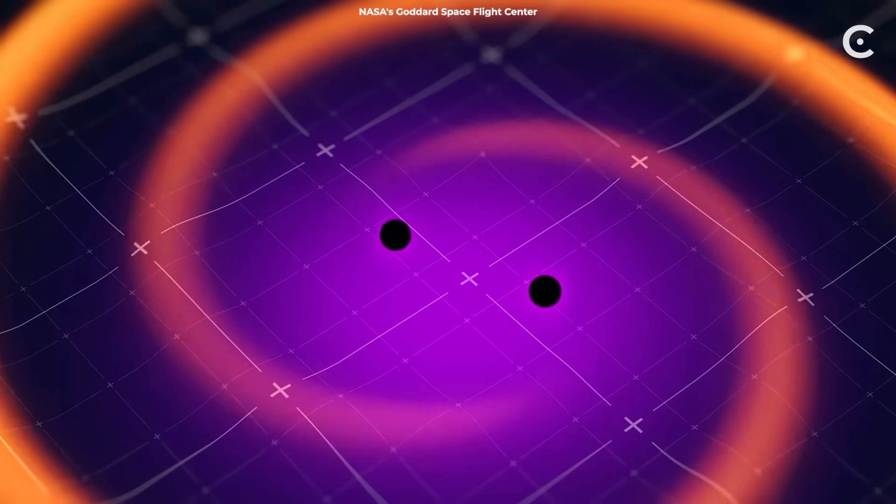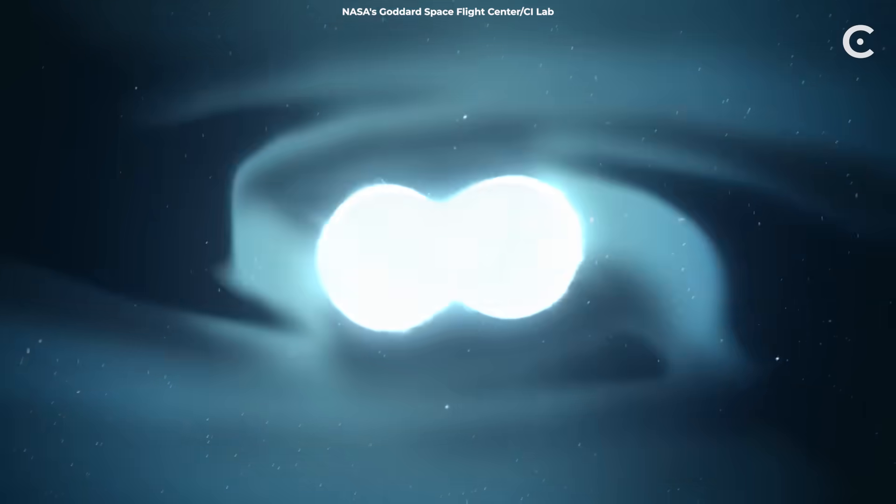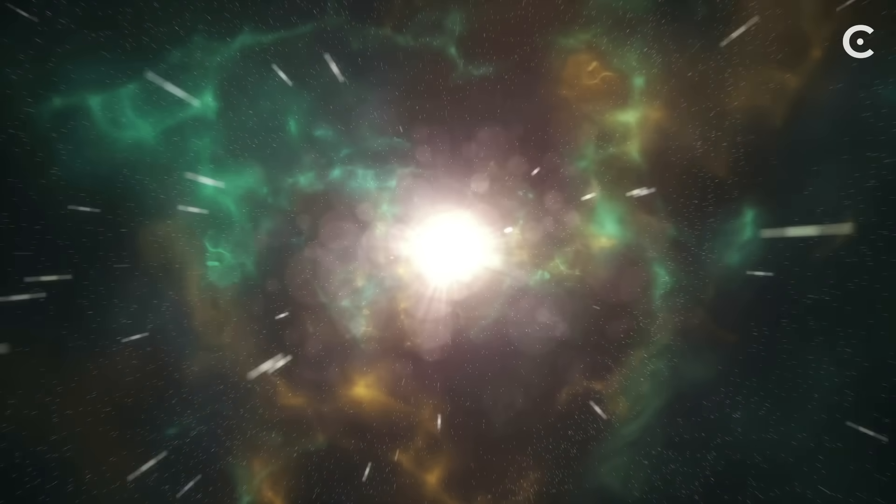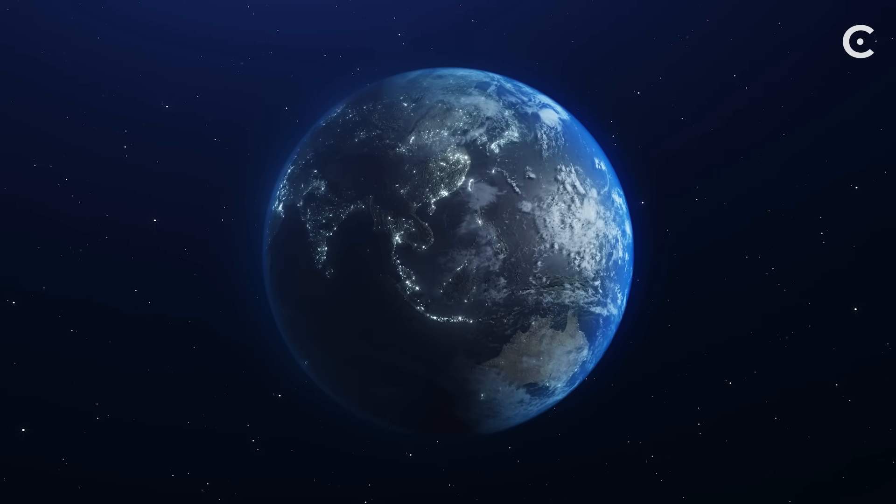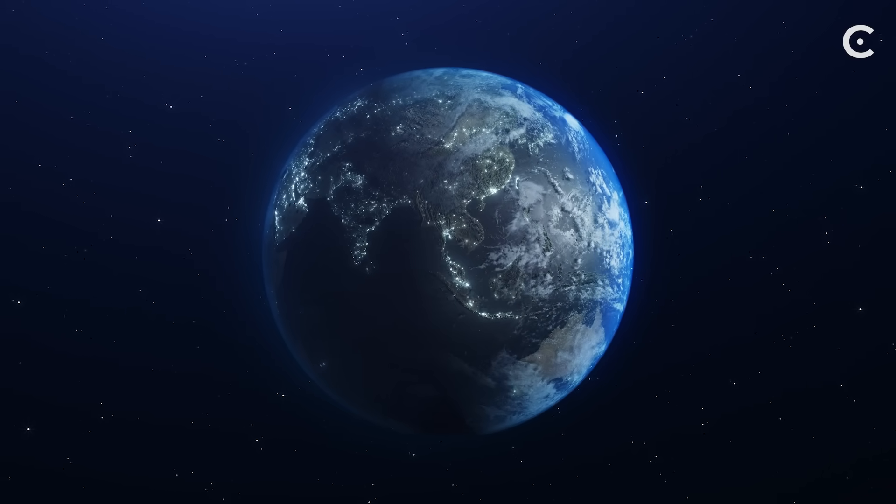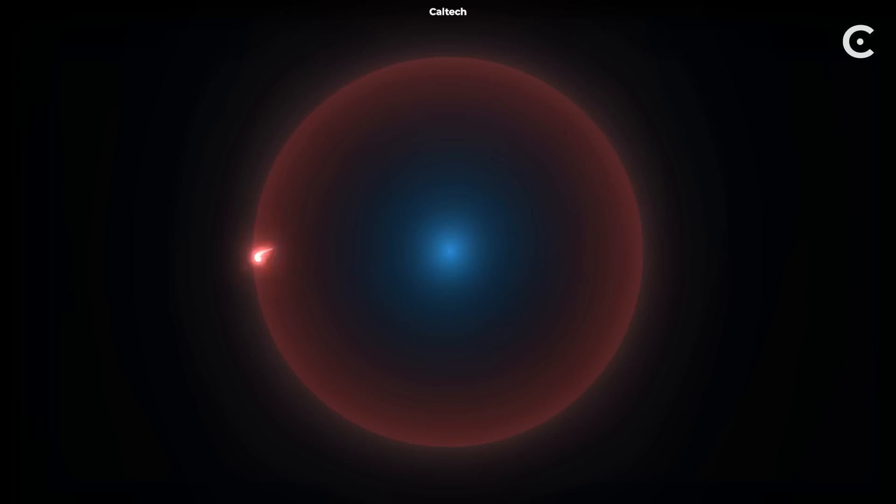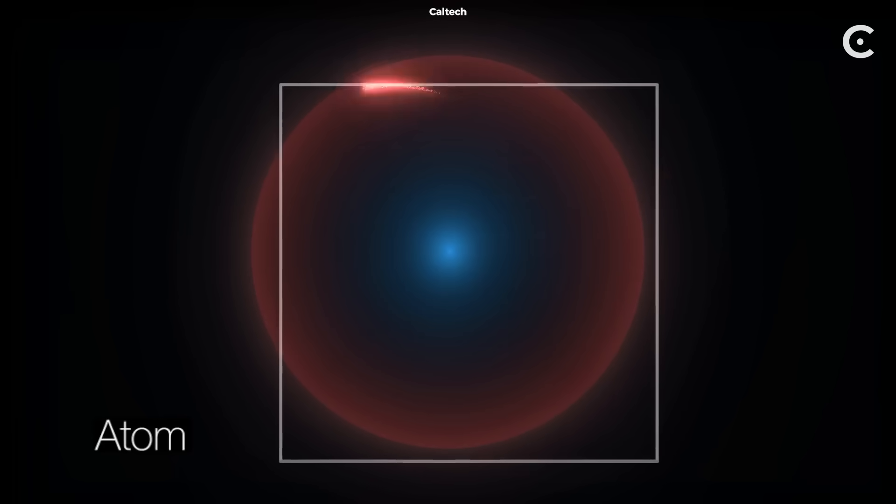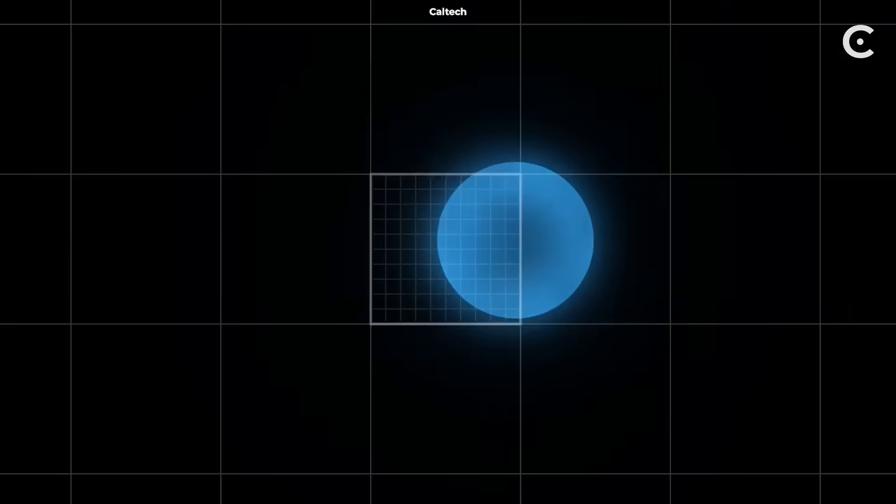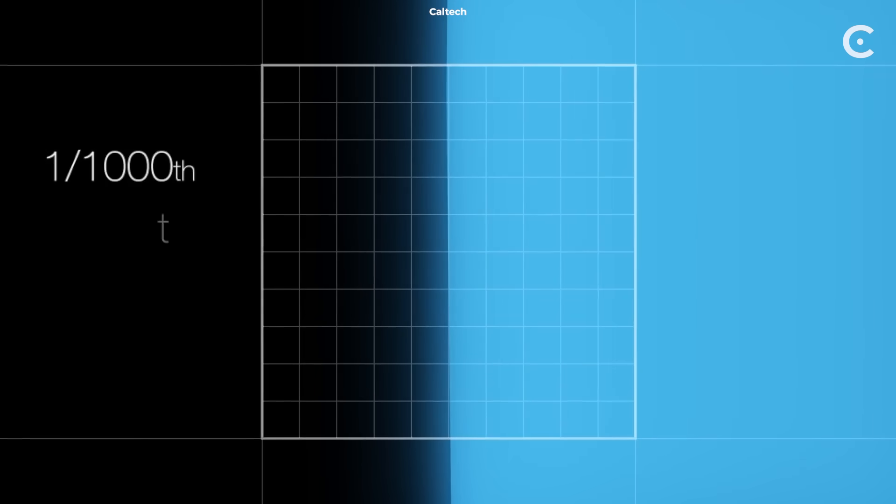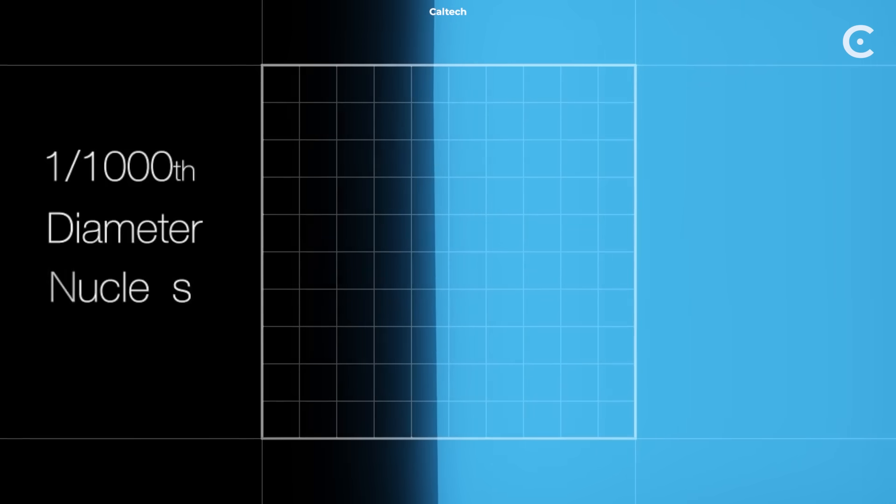We're talking about colliding black holes, neutron stars smashing together, and maybe even the remnants of the Big Bang itself. But here's the challenge. These waves are incredibly tiny by the time they reach us. When the LIGO detectors first detected gravitational waves in 2015, they measured distortions that were one ten-thousandth the width of a proton.